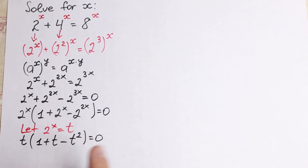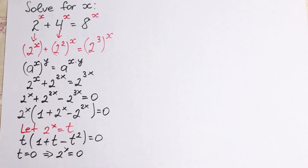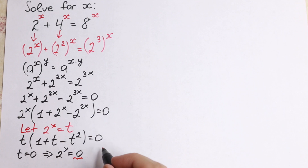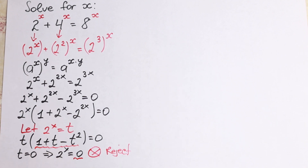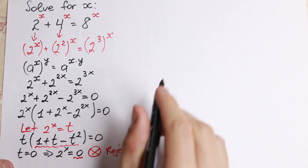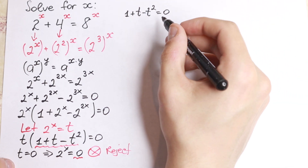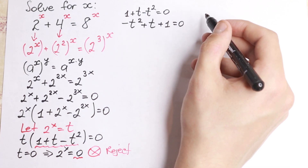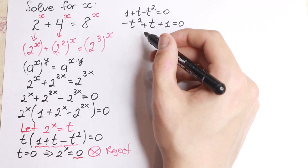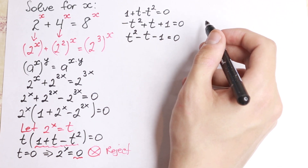We can quickly note that t equal to 0 is one solution of the product, but since t equals 2 to the x, we would need 2 to the x equal to 0, which is impossible — so we reject that case. We then work with the remaining factor: 1 plus t minus t squared equal to 0. Rearranging and multiplying by minus 1 gives us the quadratic t squared minus t minus 1 equal to 0.